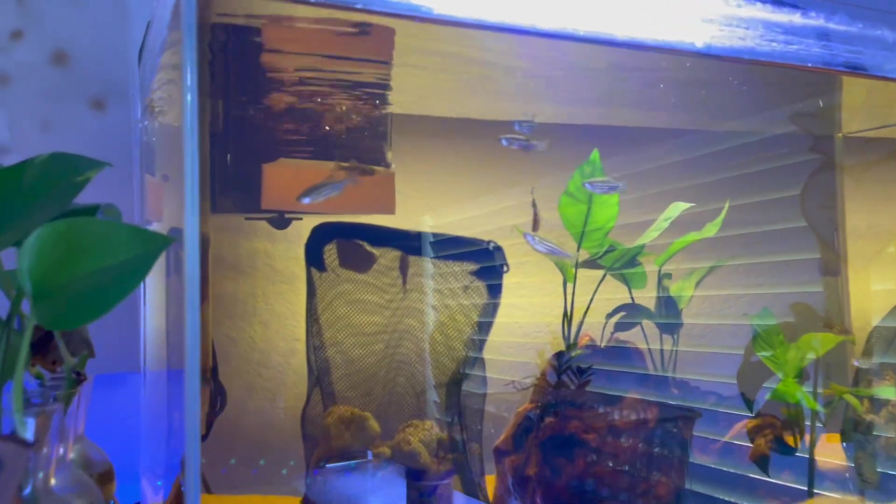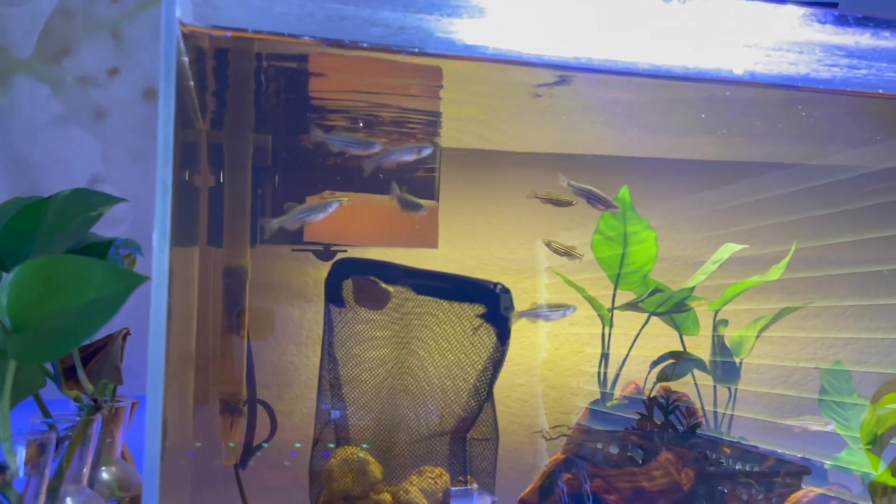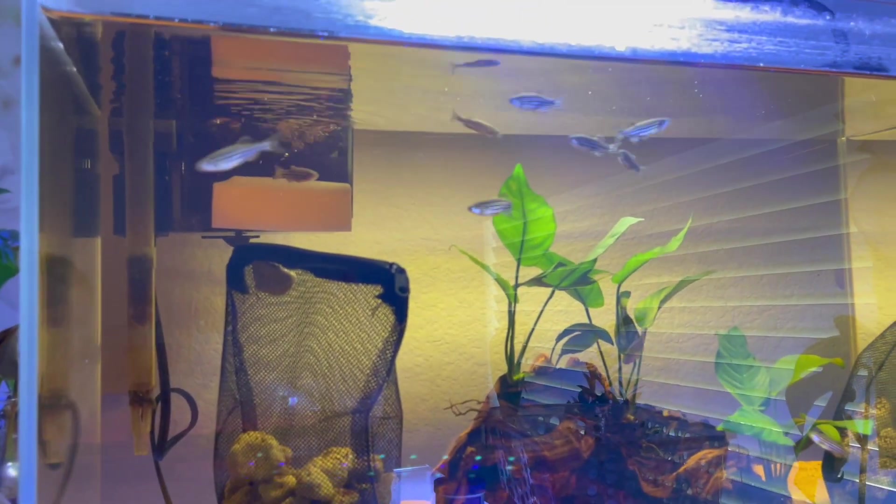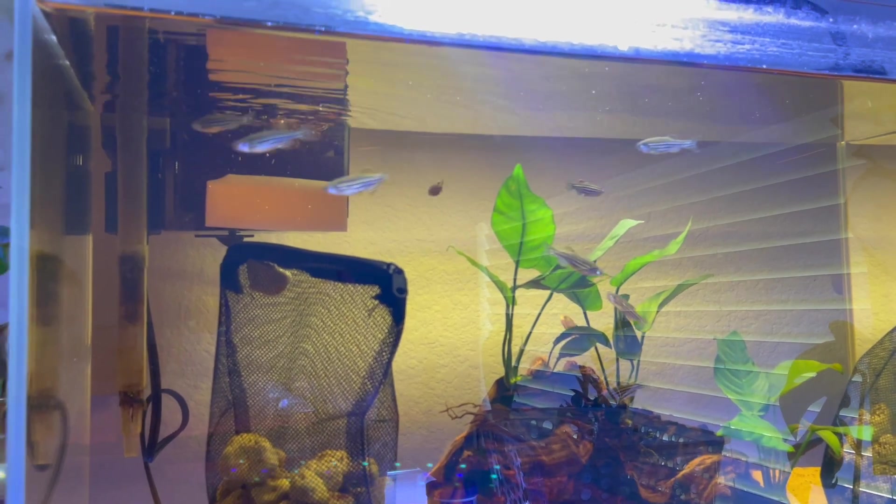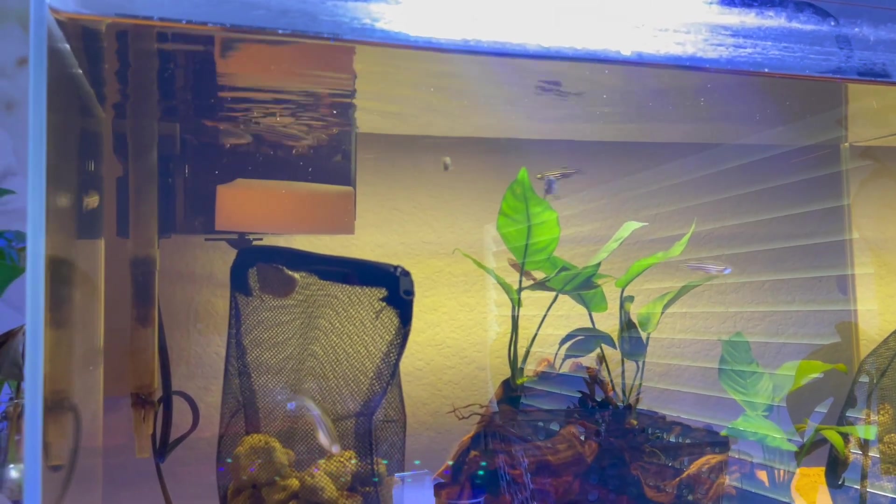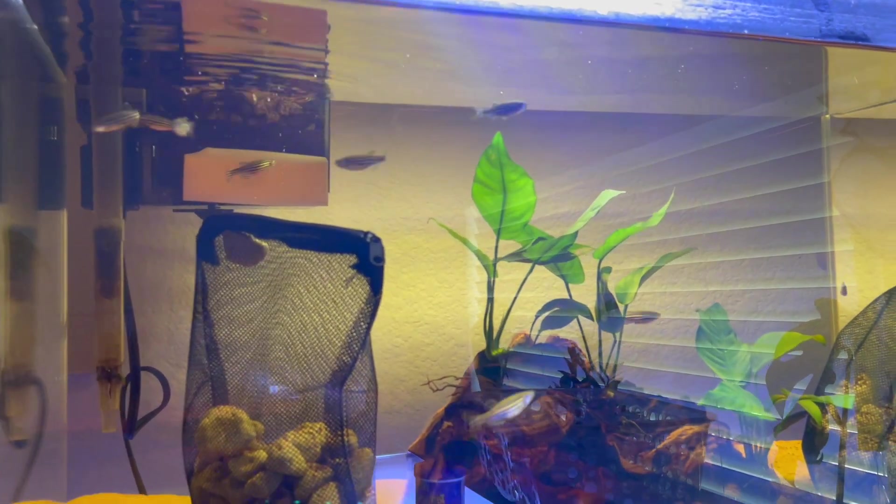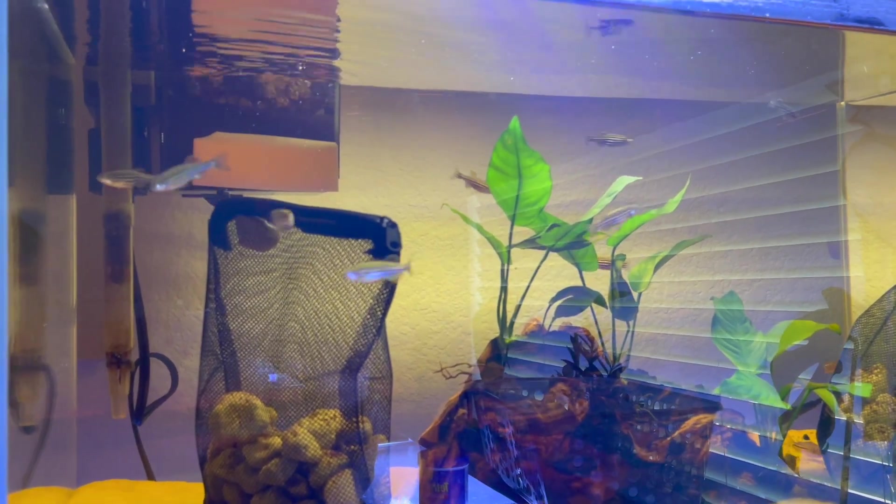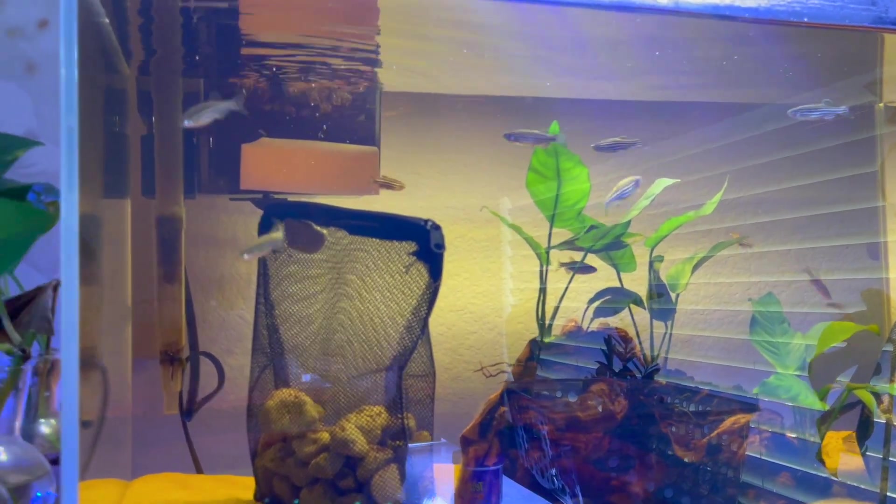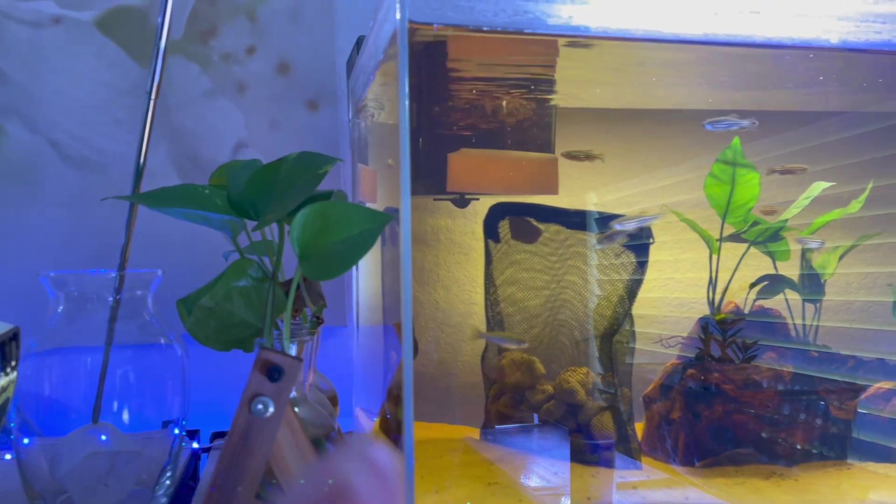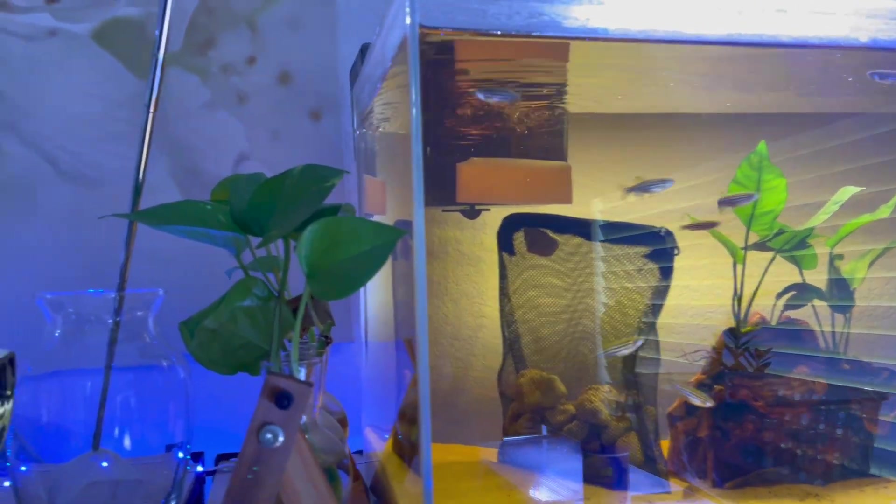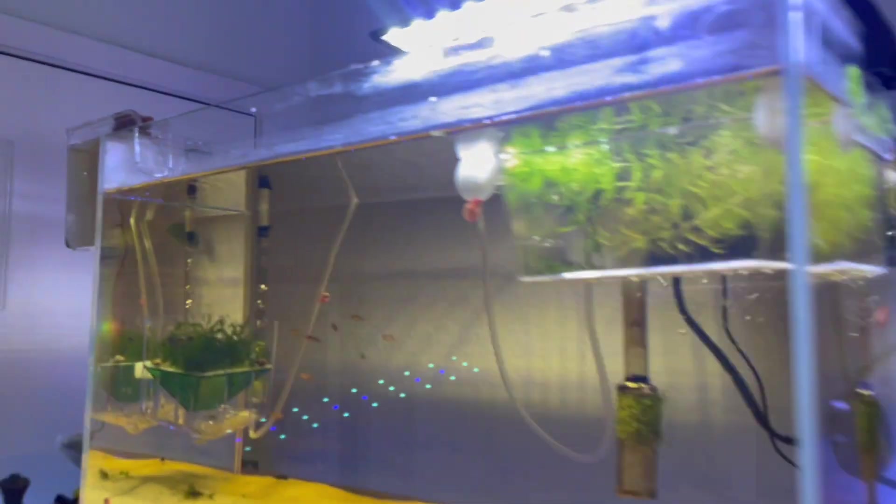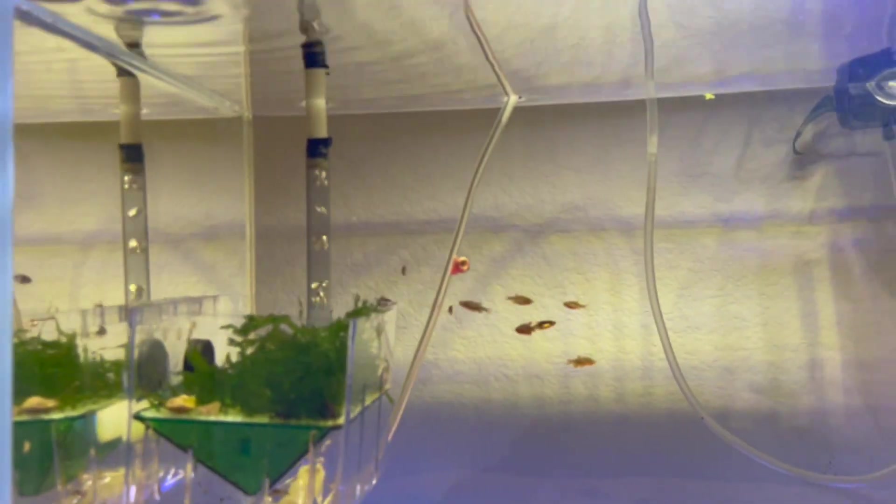So this tank is just purely for breeding right now. And up top I have some zebra danios here for a while now. And some of them were pretty fat and I thought it would be a good opportunity to kind of do a similar setup to the CPDs over here.